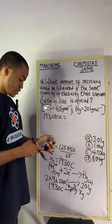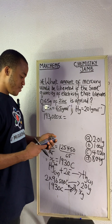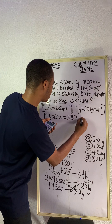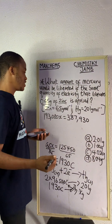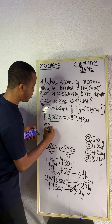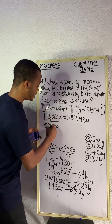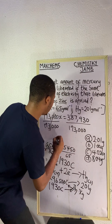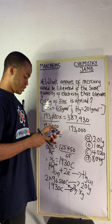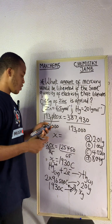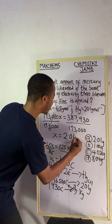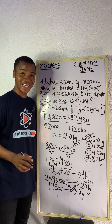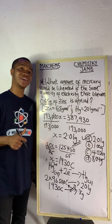1,930 × 201 gives us 387,930. So 193,000x = 387,930. Dividing both sides by 193,000, our x is equal to 2.01 grams. So the correct answer is option A — 2.01 grams of mercury. I hope this is simple to understand. Don't forget to like and follow, and I'll see you in the next one.